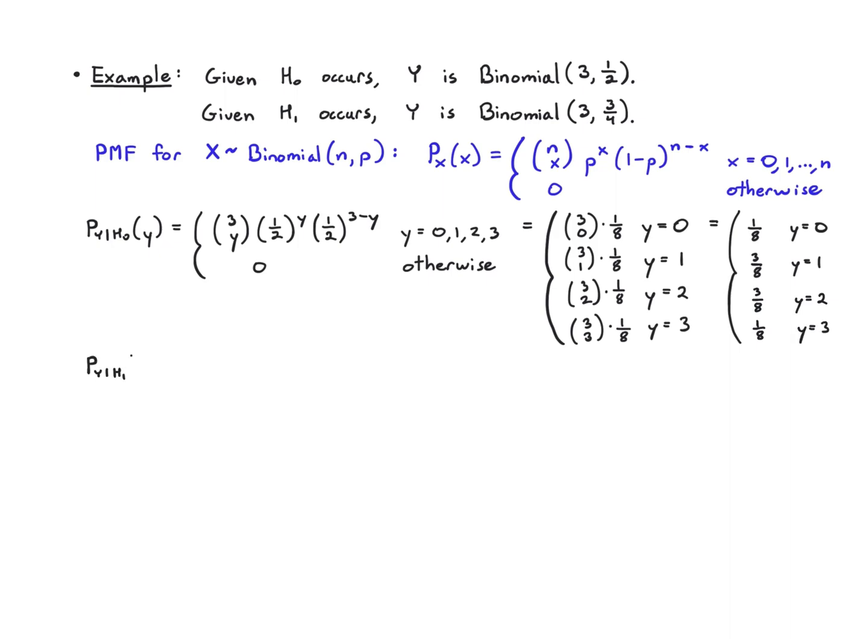For the conditional PMF, given that H₁ occurs, I have 3 choose y, 3/4 to y, 1/4 to the 3 minus y, when y is equal to 0, 1, 2, or 3.